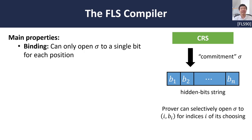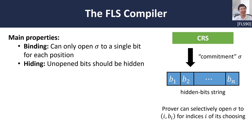We require several properties from this type of commitment scheme. First, we require that the commitment be binding — namely, once the prover has chosen its commitment, it can only open up the hidden bit string to a single value in each of the positions. Next, we require hiding, which says that after the prover chooses to open up a few bits of the hidden bit string, the verifier should not learn anything about the unopened bits. And finally, we require a succinctness property, which essentially says that the length of the commitment should be much, much smaller than the length of the hidden bit string.